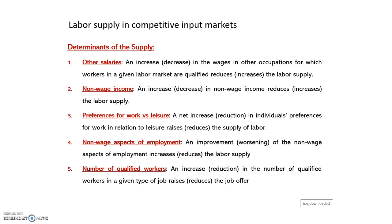The second determinant is non-wage income. An increase in non-wage income is going to reduce the labor supply. For example, if someone earns more rent from a rented apartment, there will be a lower labor supply, as some people will decide not to work if they have a higher non-wage income.